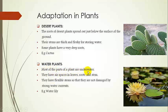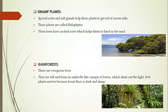The second category is water plants. These plants are also called hydrophytes. Because most parts of the plant are underwater, they have air spaces in leaves, roots, and stem. They also have a flexible stem so that they are not damaged by strong water currents. The example of the water plant is the water lily.